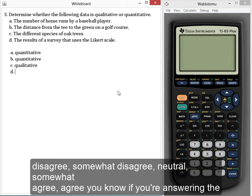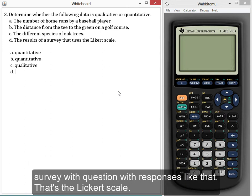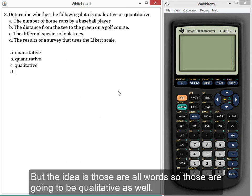neutral, somewhat agree, agree. If you're answering a survey with questions with responses like that, that's the Likert scale. The idea is those are all words, so those are going to be qualitative as well.